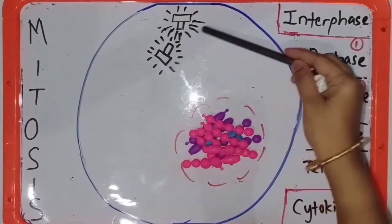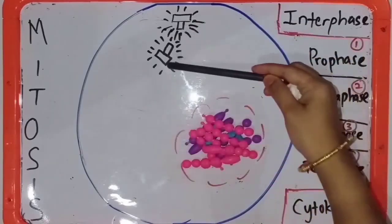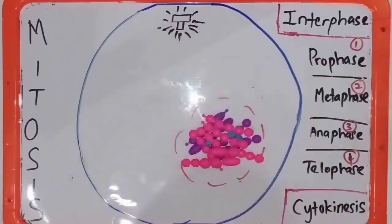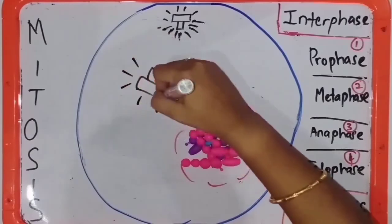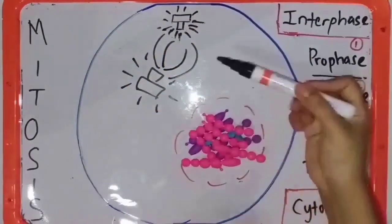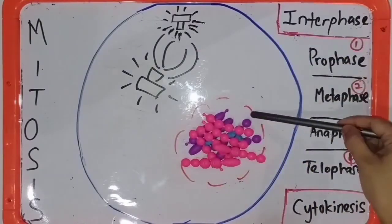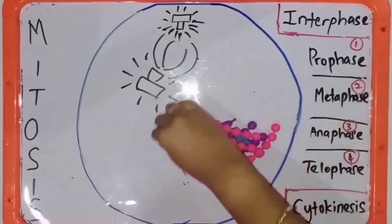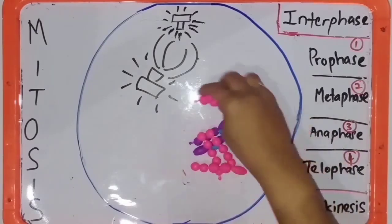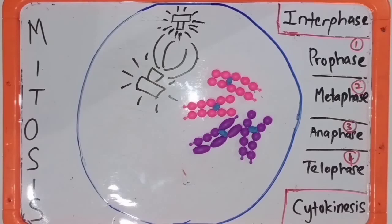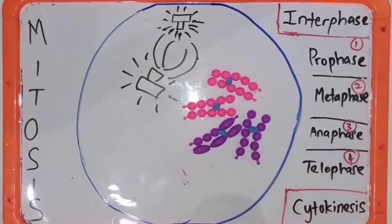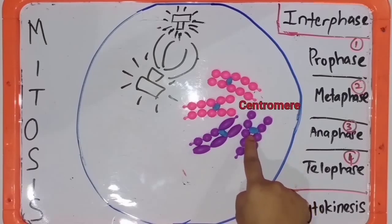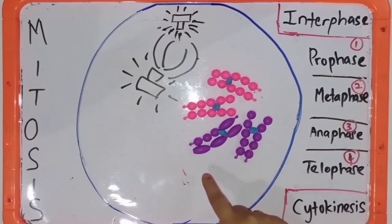During the prophase stage, the two centrosomes move toward the opposite poles of the cell. While the two centrosomes move toward opposite poles, the mitotic spindle extends from the centrosome. The nuclear envelope surrounding the chromatin starts to disappear, and the chromatin condenses into chromosomes — now the chromosomes are visible. Each chromosome consists of two identical sister chromatids, and these two sister chromatids attach at a point called the centromere. This is the first stage of mitosis: prophase.